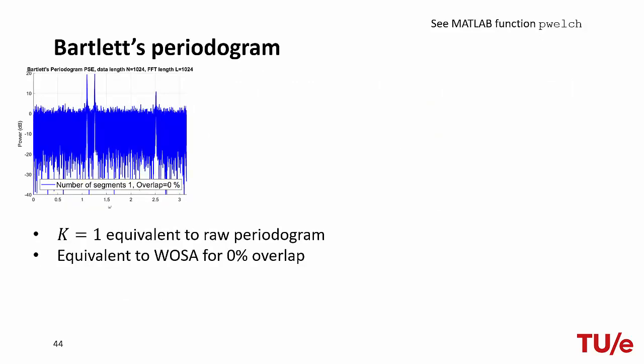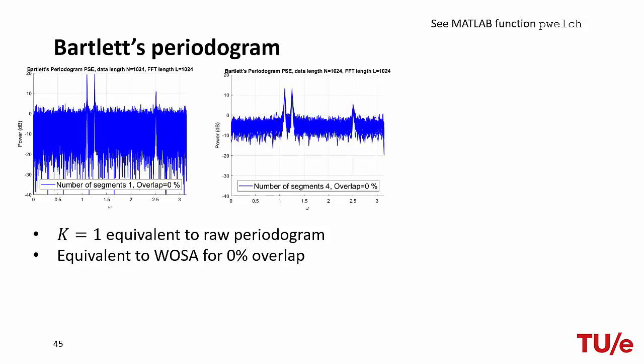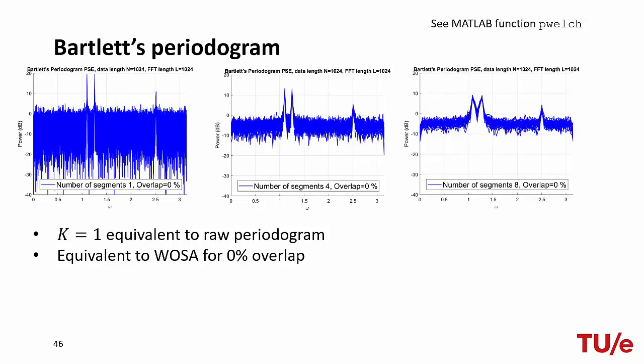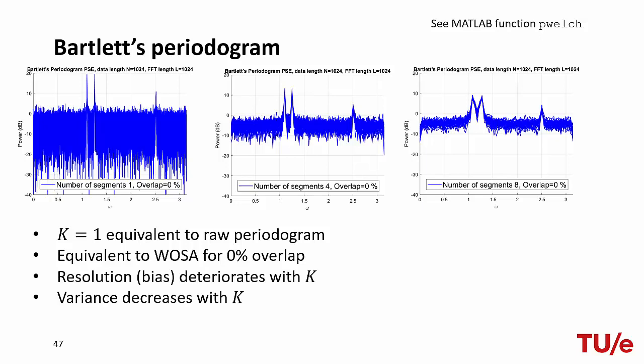Now we look at Bartlett's method, implemented in MATLAB using pwelch with zero overlap. With one segment, this is equivalent to the periodogram. With four segments, we observe a decrease in spectral resolution — spectral peaks become wider — but also a decrease in variance. With eight segments, there is a further decrease in spectral resolution (increase in bias) and a further reduction in variance. This confirms our theoretical results: bias increases with K while variance decreases with K.